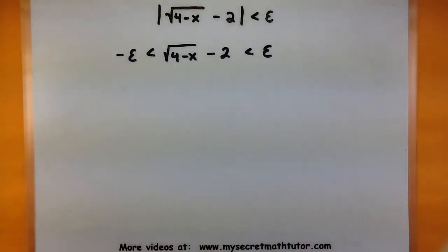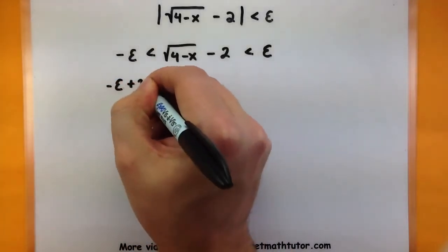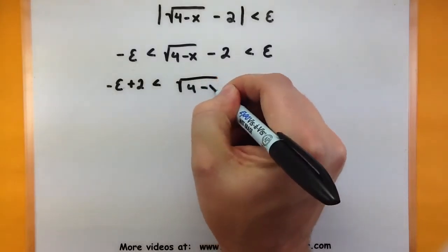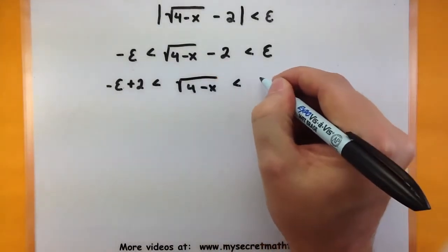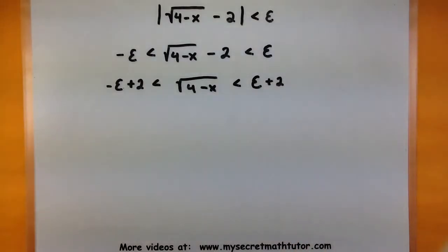Continuing on, it looks like I can add 2 to both sides. So minus epsilon plus 2 is less than the square root of 4 minus x. That is all less than epsilon plus 2.